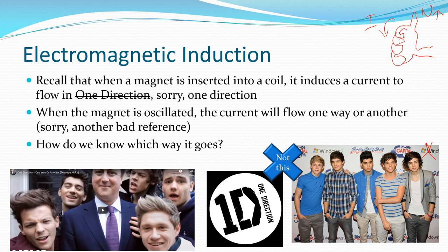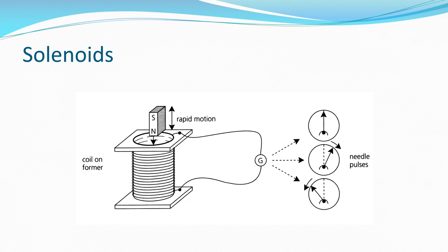When the magnet is oscillated — moved in and out of the solenoid — you can show that the current flows in opposite directions. What we look at with Lenz's Law is how do we know which way the current starts going. Here's our magnet moving up and down inside the solenoid, and we can show that the current flows in different directions. Lenz's Law shows us how to work out which way it's going to go.